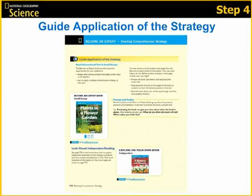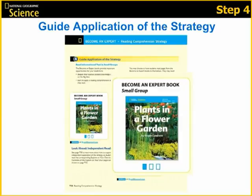Step 4 of our five-step model is guiding students' application of the strategy as they read their Become an Expert book. The Become an Expert book repeats the same big ideas and academic vocabulary from the big ideas book and provides students an opportunity to reinforce and expand upon what they've learned. The Become an Expert book allows students to read about a particular topic at their instructional reading level, become an expert, and then come back to the whole group to share and compare as the expert on their topic with the other groups. There are low, medium, and high Become an Expert books for each unit as indicated by color coding and rectangles. You can group your students by reading level, interest, or mixed collaborative groups.